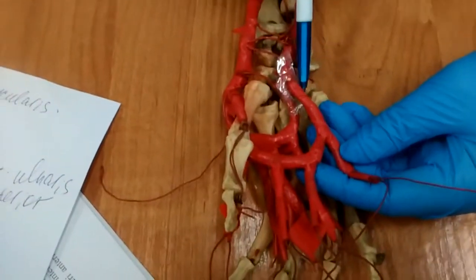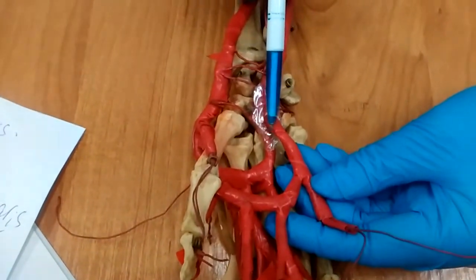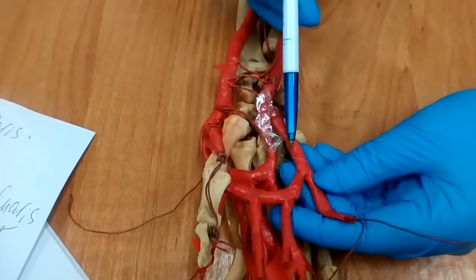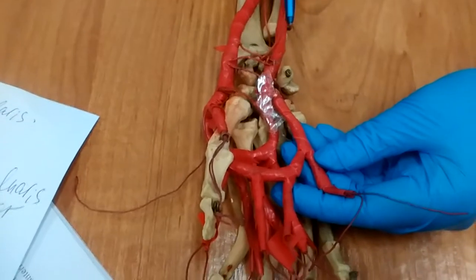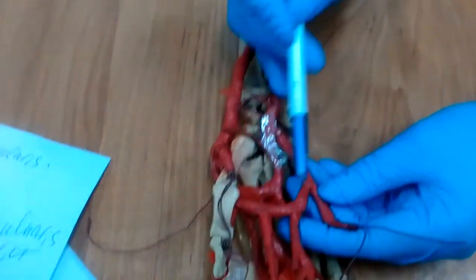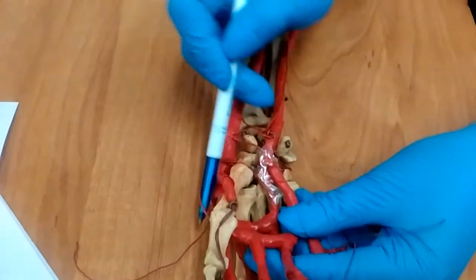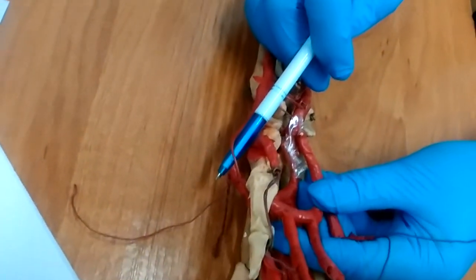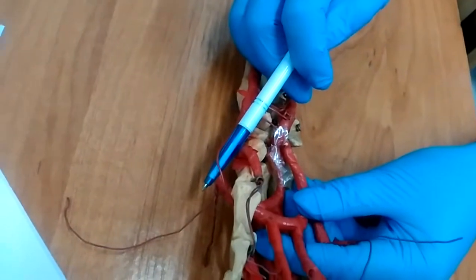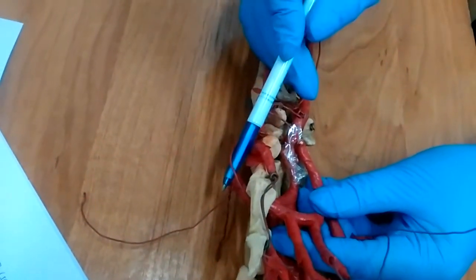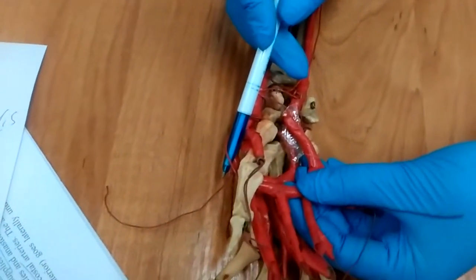This is the arcus palmaris superficialis, which is formed by the terminal end of arteria ulnaris and ramos palmaris superficialis from the radial artery. This is anastomosis too.